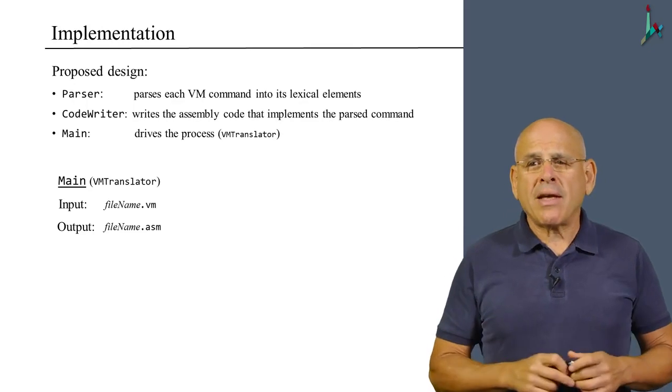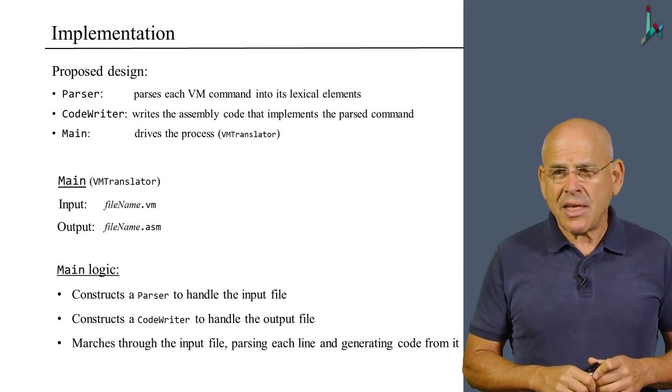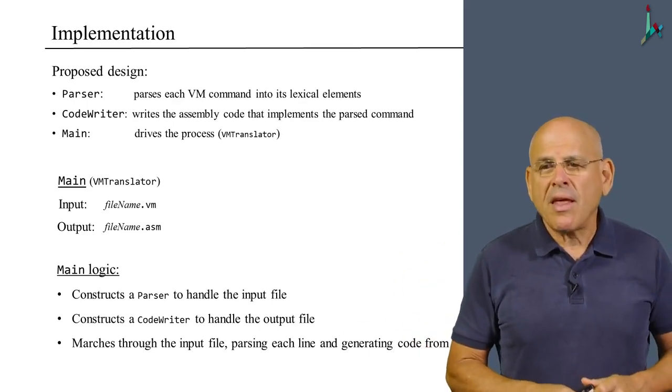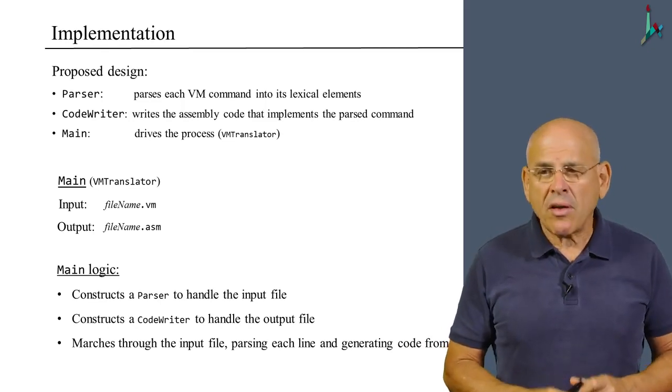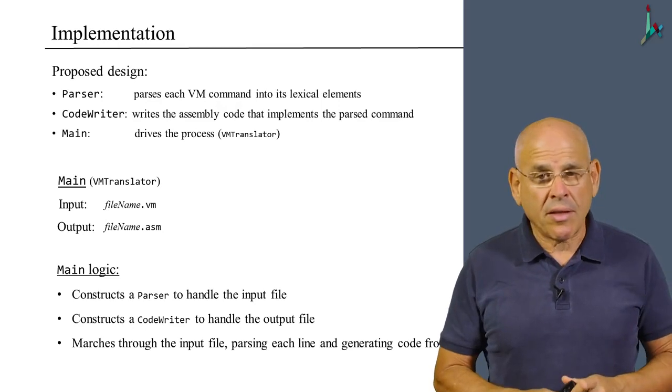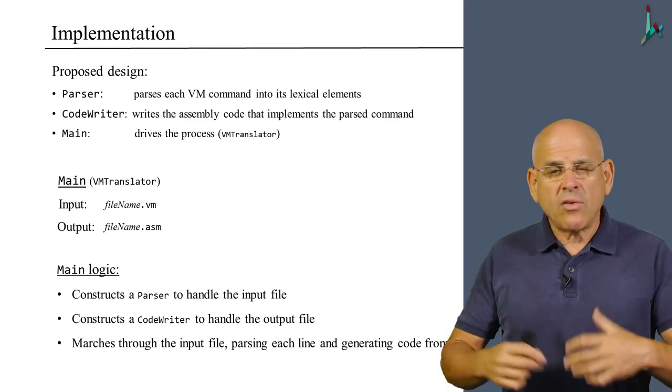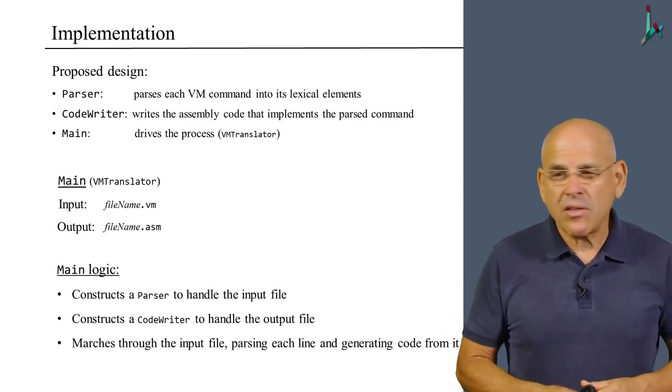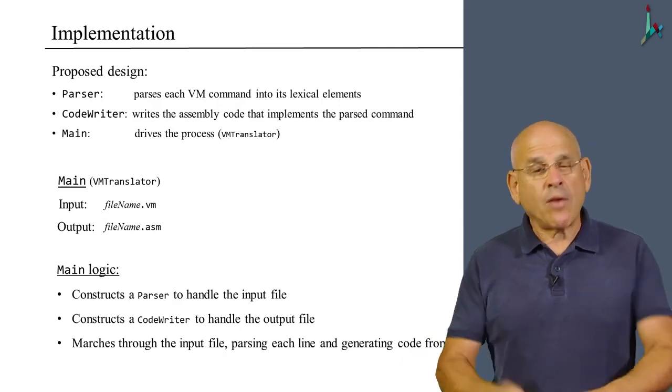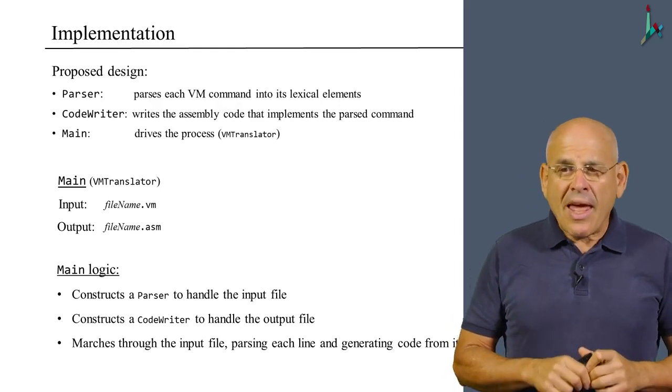How did this main class operate? Well, the logic of this main class is that it will have some main method that does the following. First of all, it constructs a parser in order to handle the input file. Then it constructs a code writer to handle the generation of the code that we have to output.